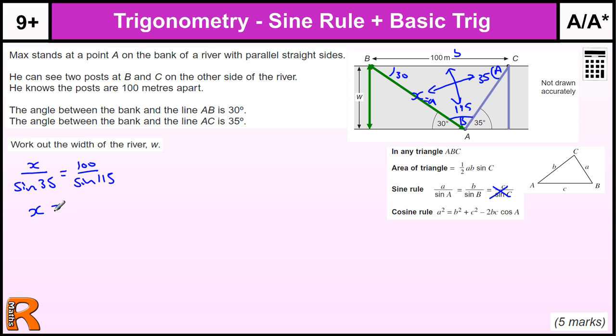From there, we can find X, because that's going to be sine 35, times by 100, over sine 115.